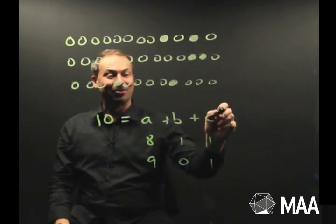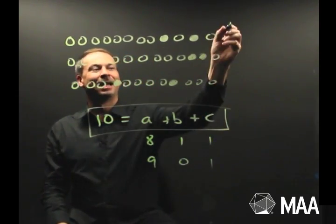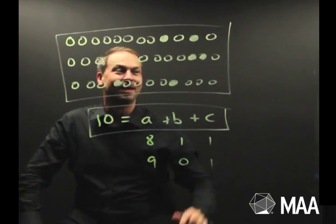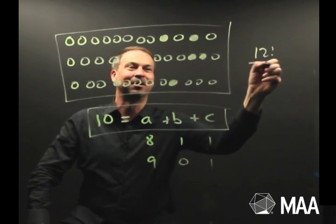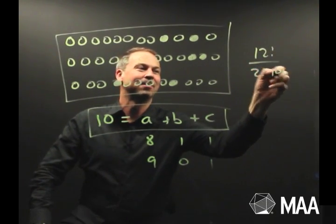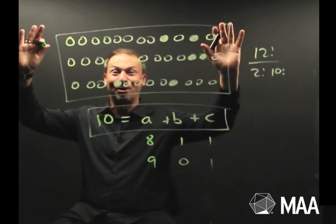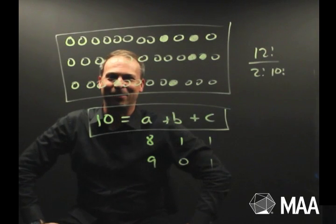So the question now is not an algebra question anymore. It is, how many ways can I color two dots out of a row of 12 dots? That's a counting problem. In fact, the answer is 12 factorial over 2 factorial times 10 factorial. Bingo. There's the answer. That's how many solutions are to this algebra equation, all from drawing a picture. Very powerful indeed.